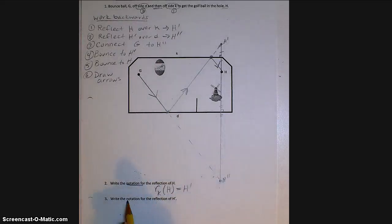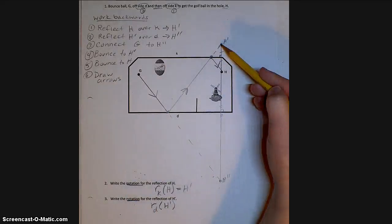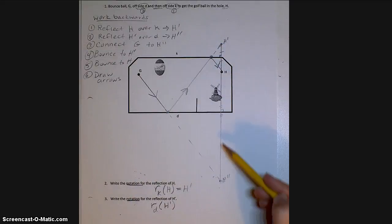Now I want to do the same thing, write my notation, but this time for H prime. So I'm still doing a reflection, but instead of reflecting over K, I'm reflecting over the line D. So I'm going to put a little D. And the point I was reflecting was H prime. When I did this reflection, it brought me down here to H double prime. So it equals H double prime.